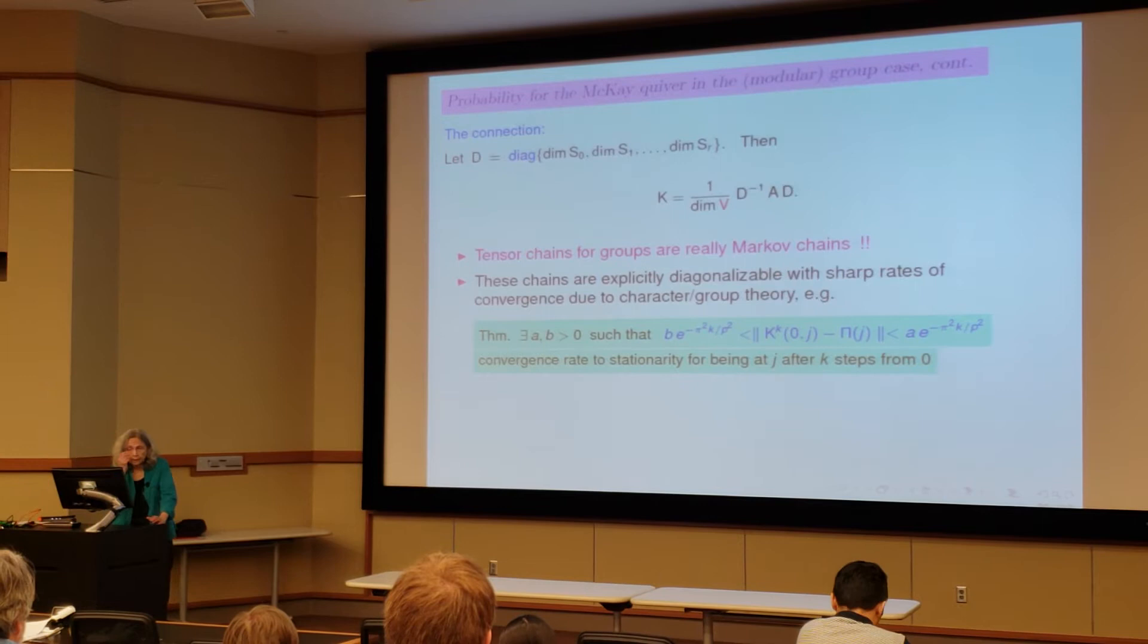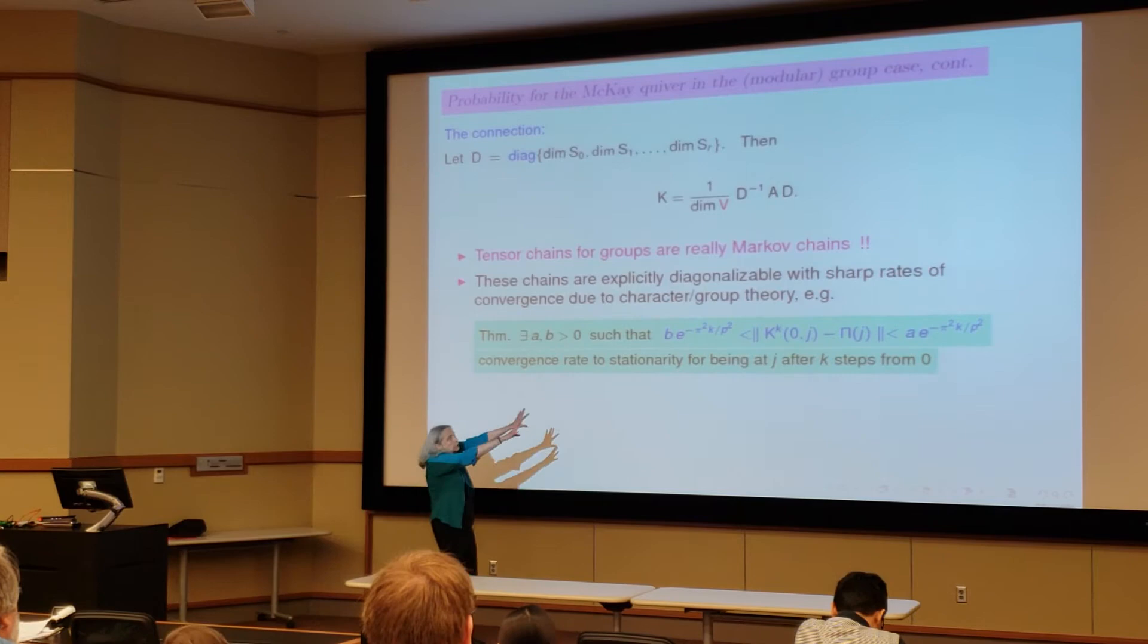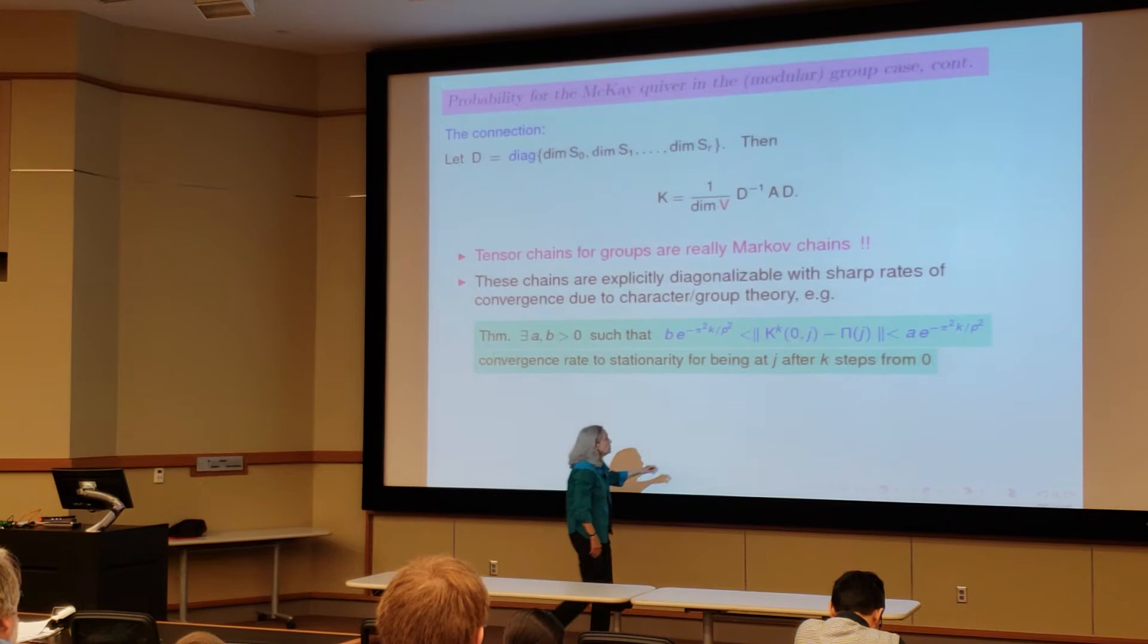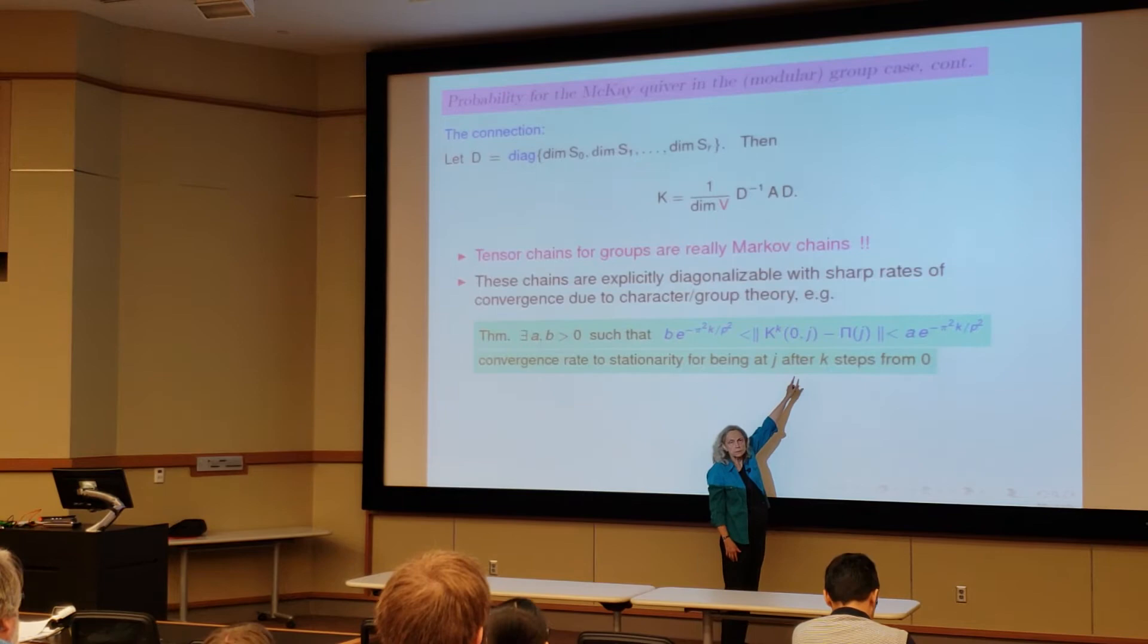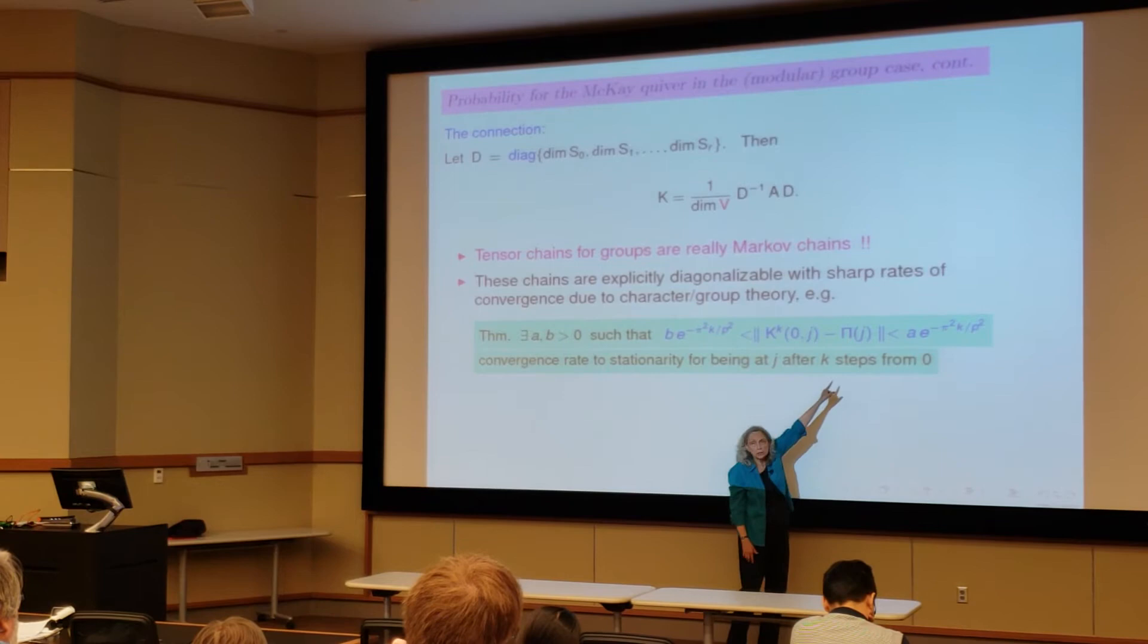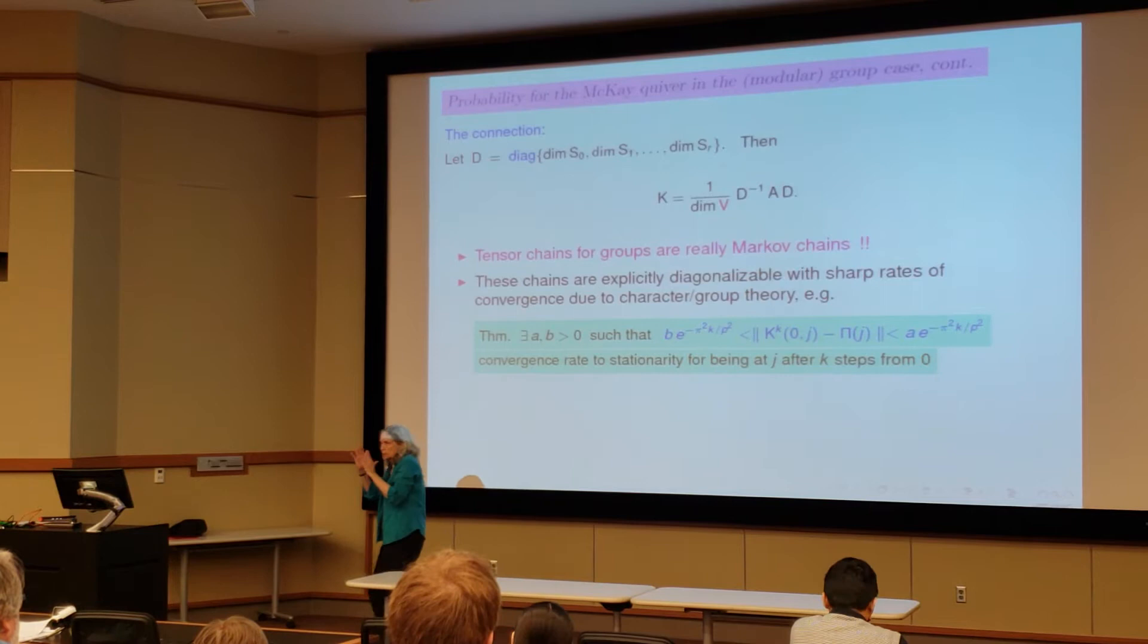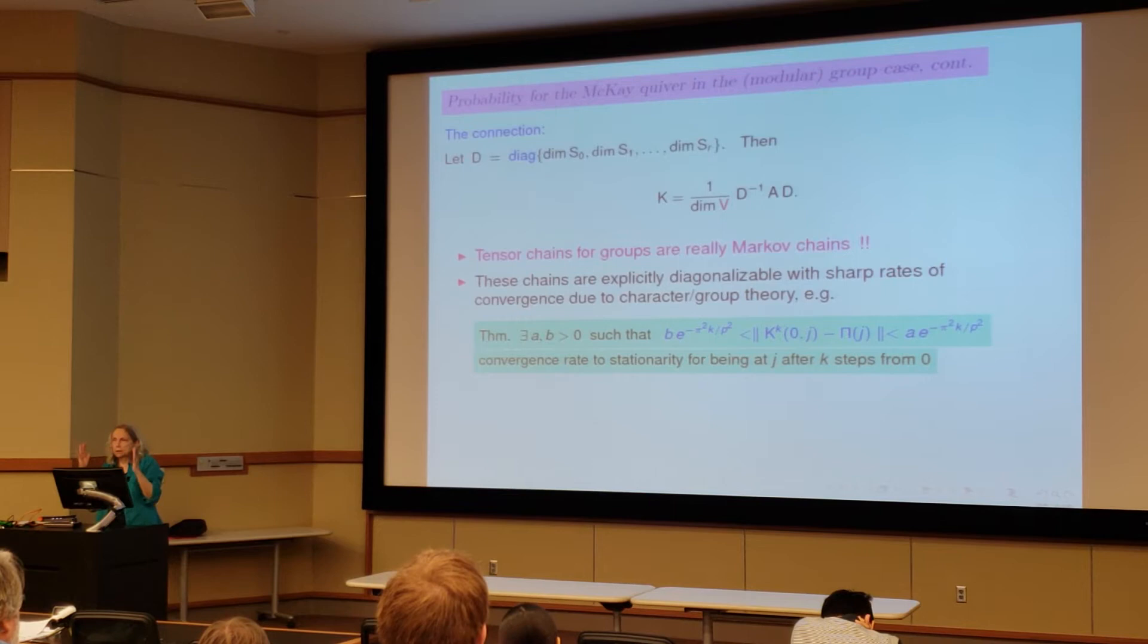And here's what a result looks like. So there exist constants, these are universal constants that don't depend on K, such that where you are after K steps, the probability of being at J is that close to the stationary distribution. So you can see that those numbers are getting very small as K is getting large. And this is just for SL2P, where V is the two-dimensional model.